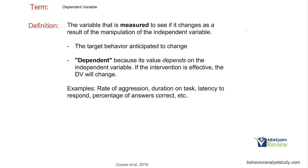The dependent variable is the target behavior anticipated to change. If we think about a simple graph — if our behavior starts at some sort of steady state, we introduce an independent variable and the behavior goes up. The behavior increases. Obviously we're going to need more manipulation and possibly reversals to make a stronger functional relationship, but whatever we introduced, this independent variable had an effect on the dependent variable and changed it in some way.